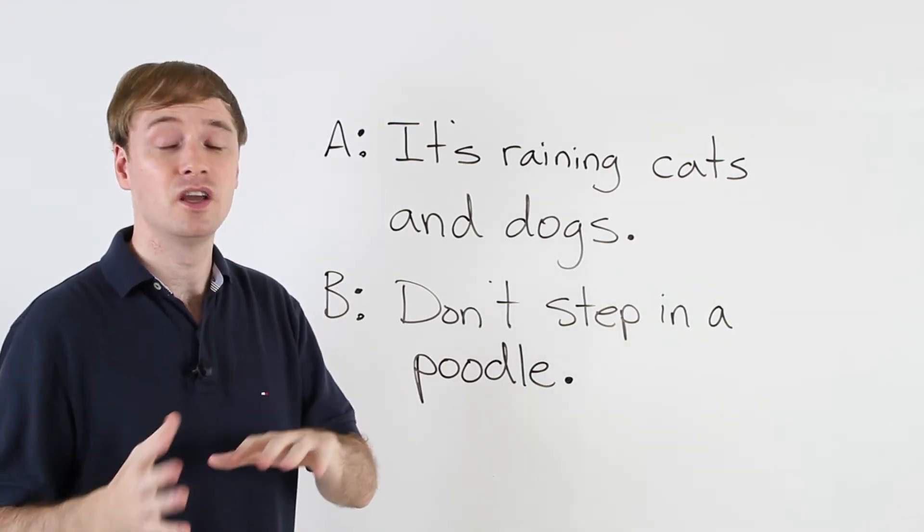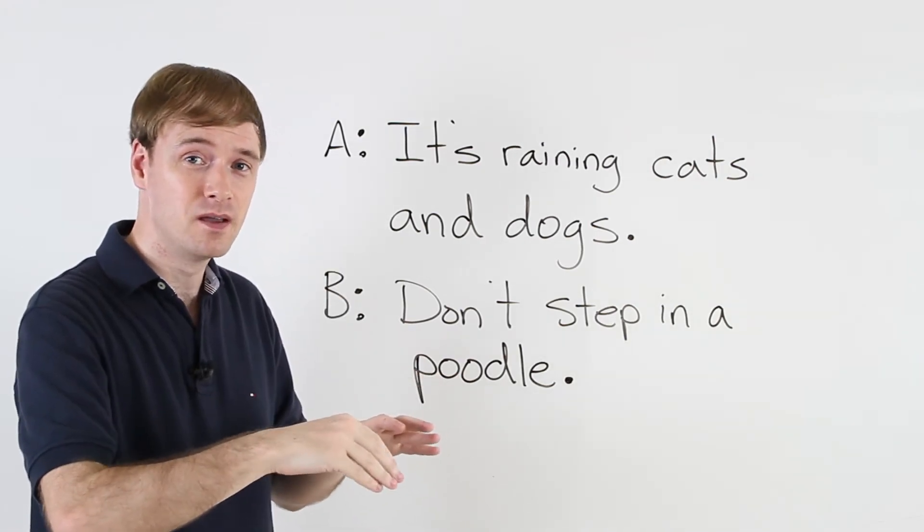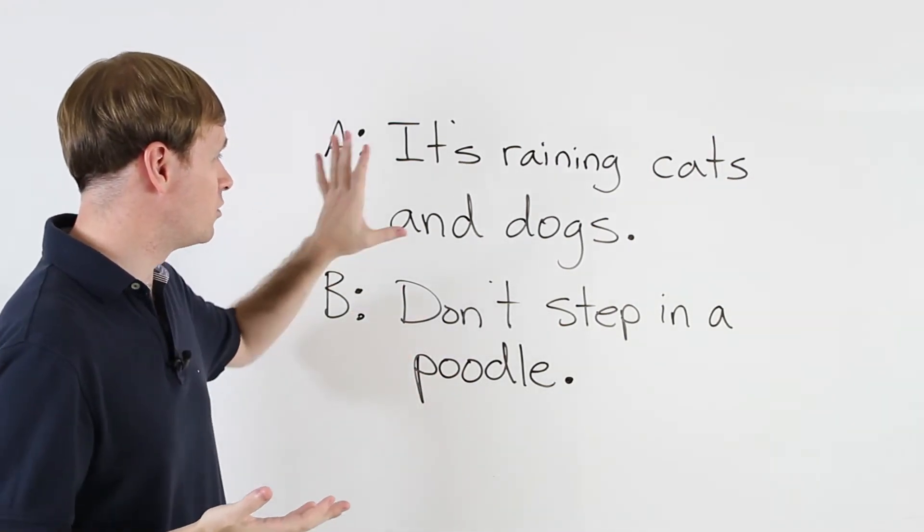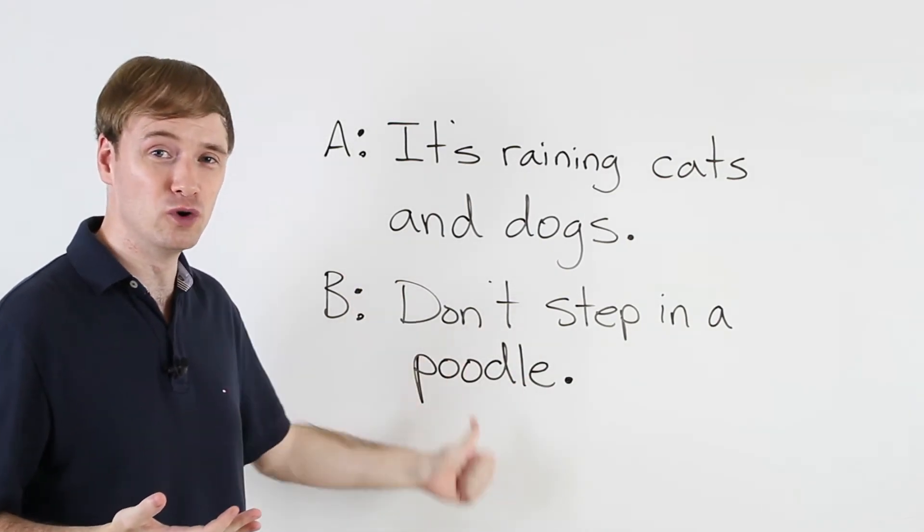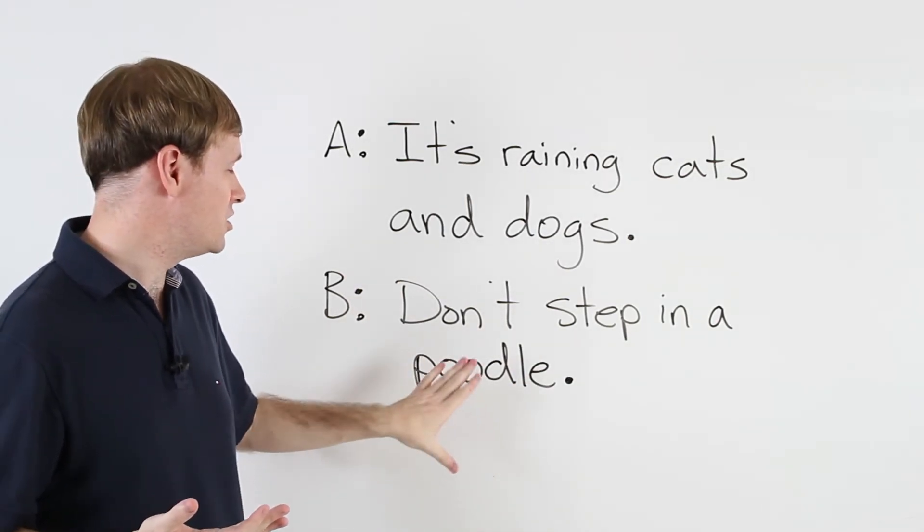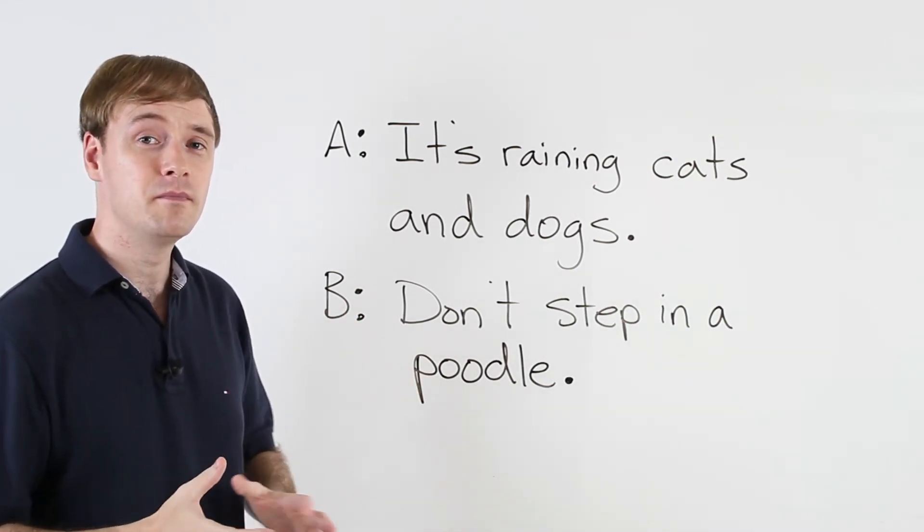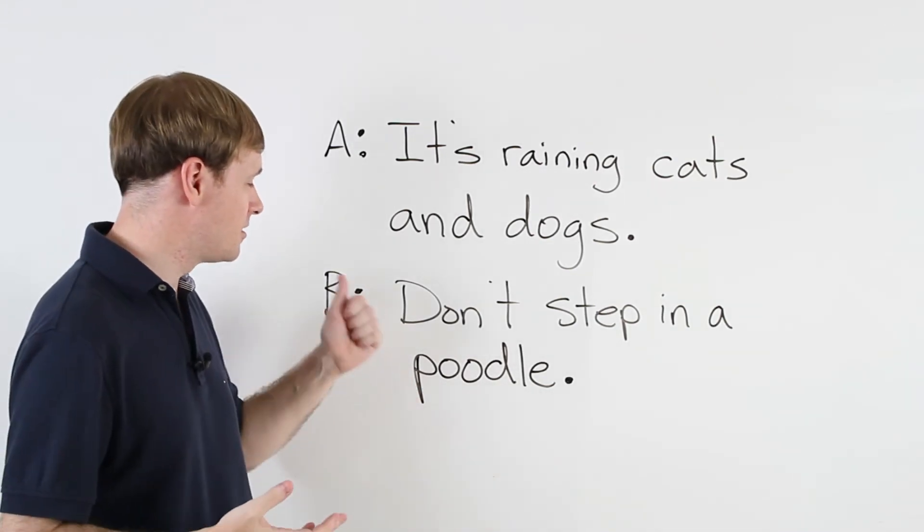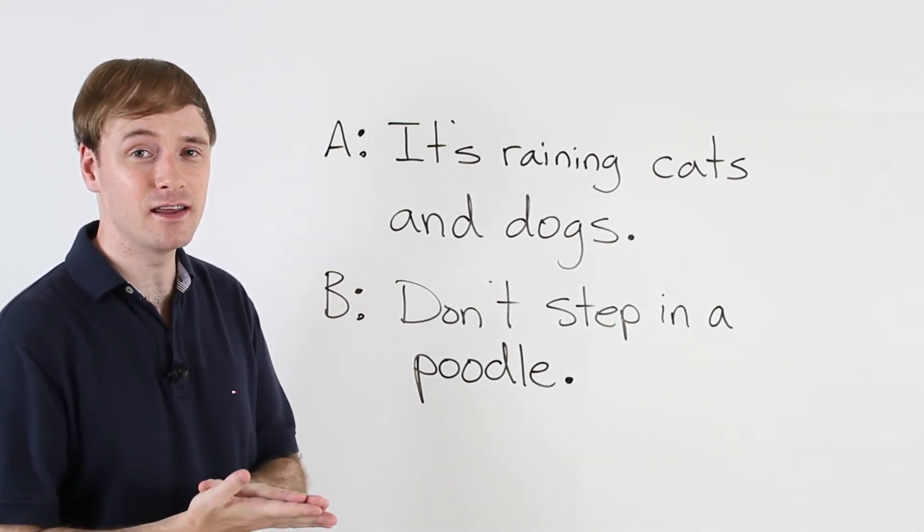So when it's raining, you don't want to step in the puddle. But he's telling a joke: it's raining cats and dogs, don't step in a poodle. So he should say don't step in a puddle, the water. But as a joke, he says poodle. Don't step in a poodle.